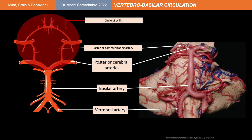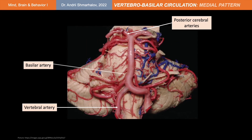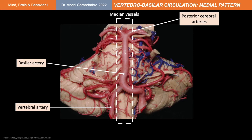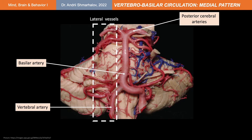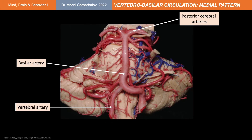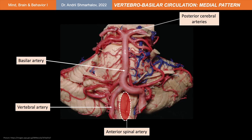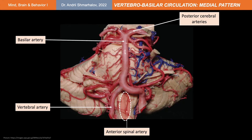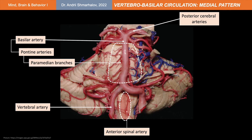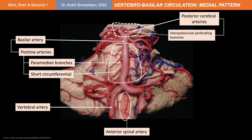Now we're going to learn more details about the blood supply to the brainstem following two patterns of perfusion: the medial one and the lateral one. This gives a good anatomical basis for understanding of the associated clinical syndromes. Following the medial pattern, look at the central part of the medulla. There is an unpaired branch of the vertebral arteries called the anterior spinal artery. It lies in the anterior median sulcus of the medulla, descends down along the spinal cord and supplies the medial part of the medulla oblongata. The basilar artery supplies the central part of the pons through the pontine arteries that include paramedian branches and the short circumferential branches. The medial part of the midbrain is supplied by the posterior cerebral arteries with its many perforating branches.